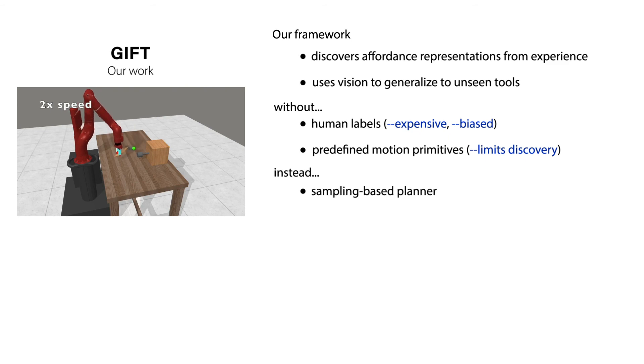Instead, we gather experience with a sampling-based motion planner conditioned on predicted key points through its reward function. In this way, we can use the full action space, so avoid limiting affordance discovery, and avoid incorporating human bias, ensuring our representation emerges only from task constraints.